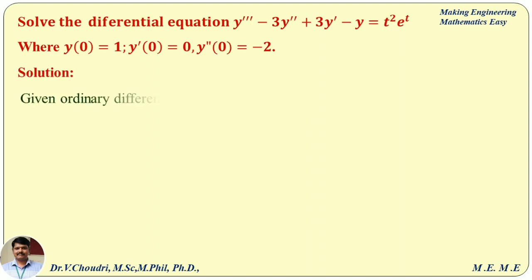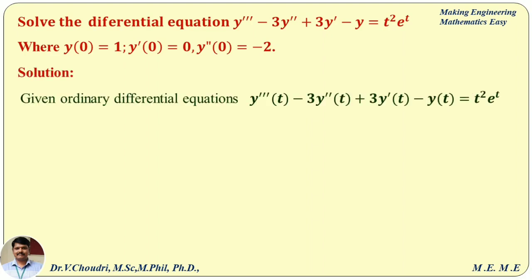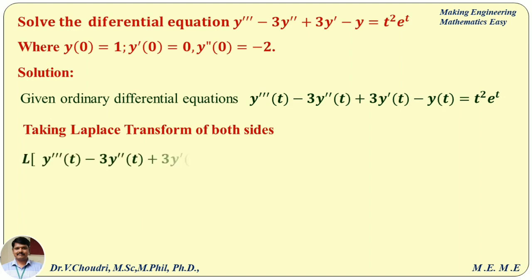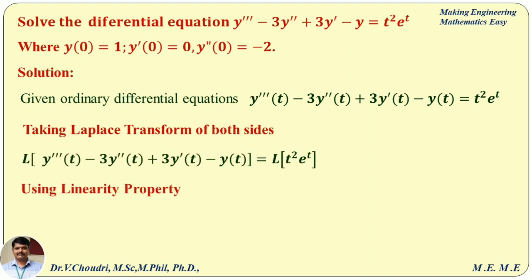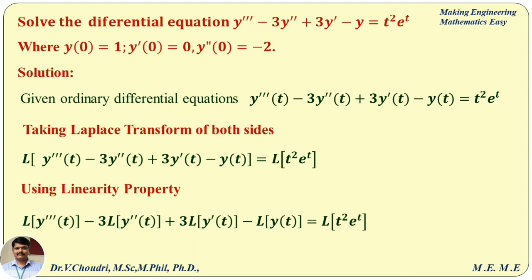First, we write the given differential equation: y''' − 3y'' + 3y' − y = t²·e^t. As per the procedure, we take the Laplace transformation on both sides. Using the linearity property, we apply L to each term on the left-hand side and to t²·e^t on the right-hand side.